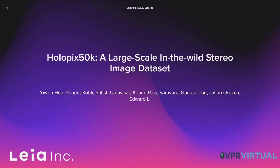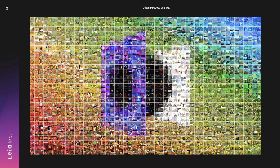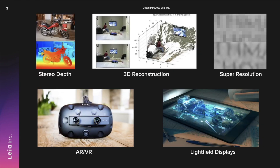Hello everyone, welcome to our poster talk on the Holopix 50k dataset. Stereo images have been used as training data for a wide variety of computer vision tasks, including depth prediction, 3D reconstruction, super resolution, VR-AR applications, and more.